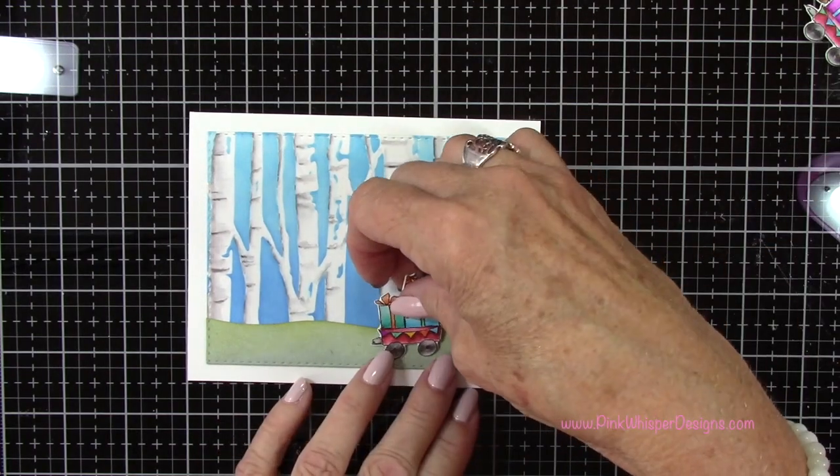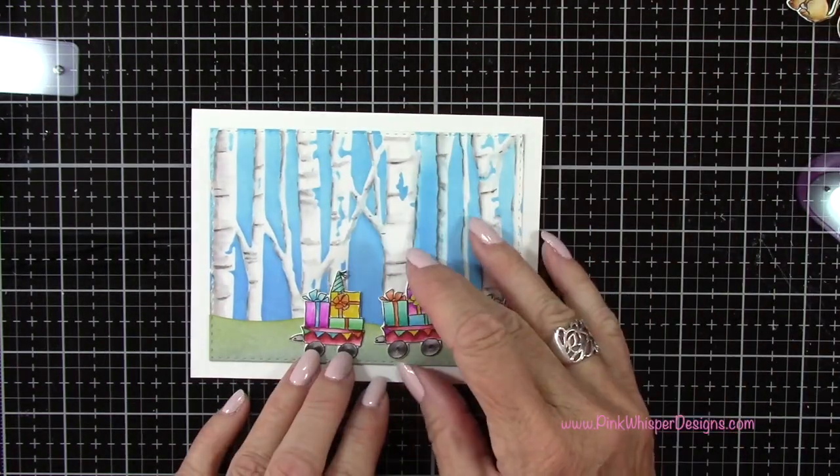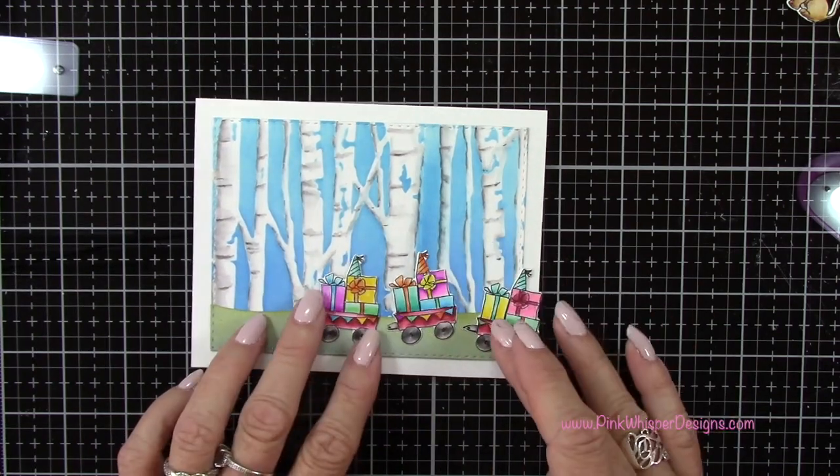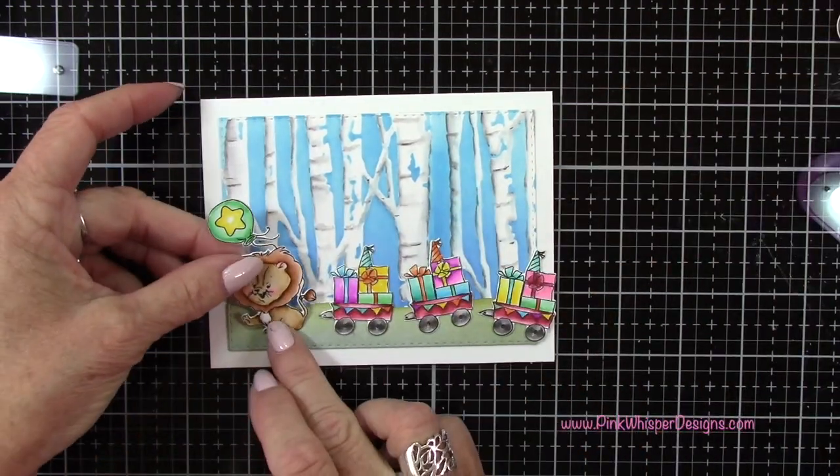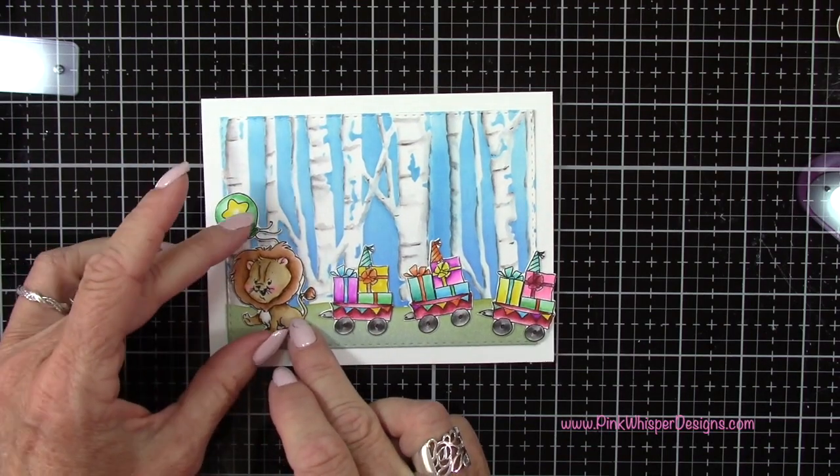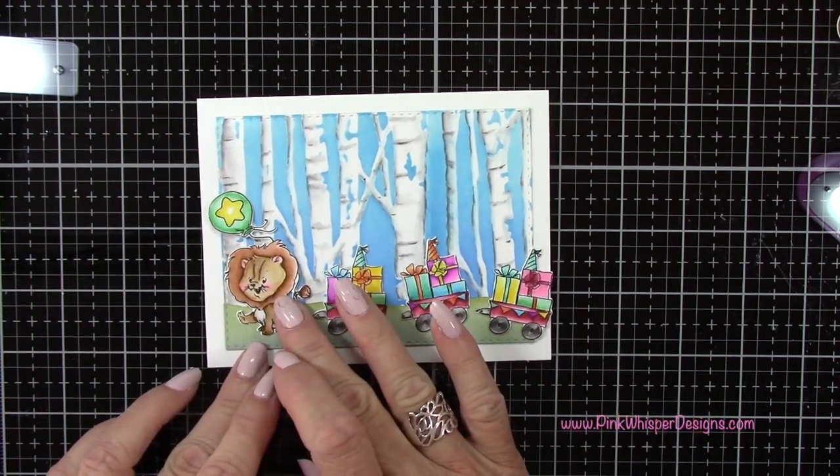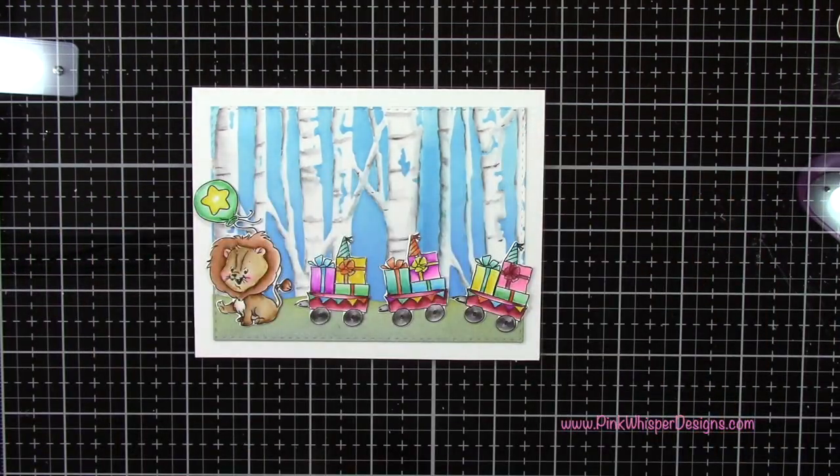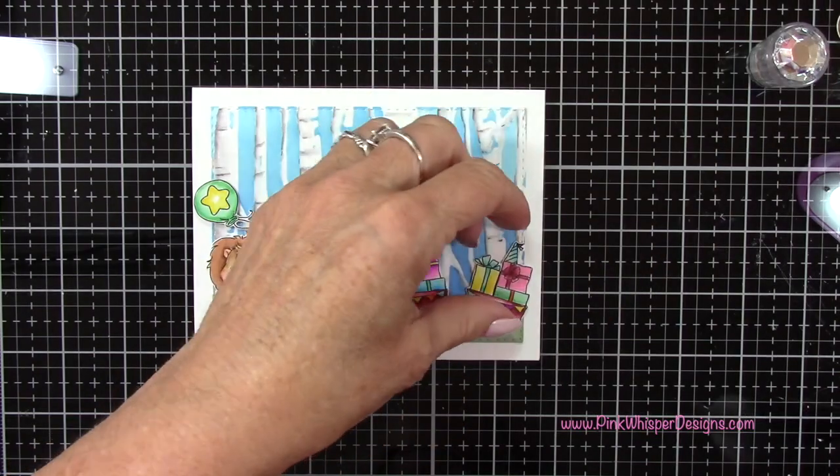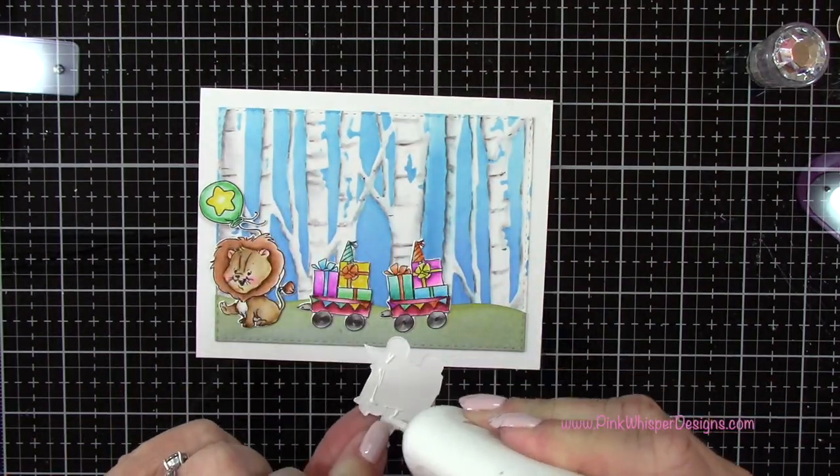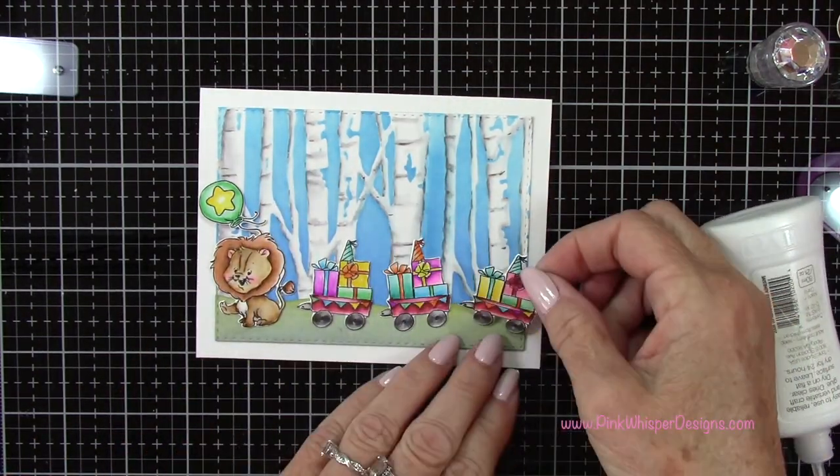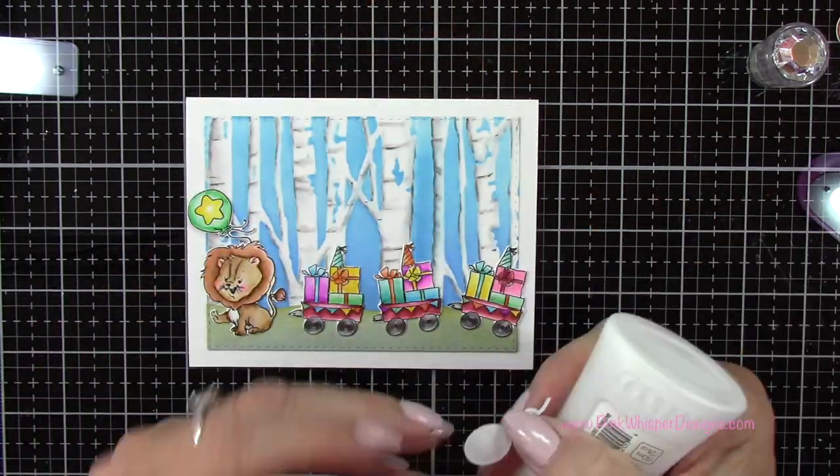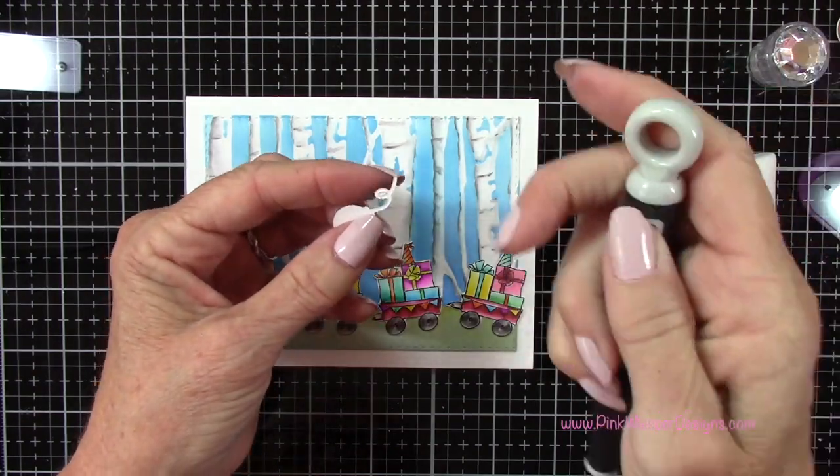And now I just want to kind of position out the little wagons here just to see where those are going to go. I kind of want them to look like they're kind of going up and down that little rolling hill border there. And then I've got my little lion leading the way here. So I've got my Nuvo deluxe adhesive and I'm going to go ahead and attach these. This first little wagon I'm going to let it hang over that little panel just a little bit to make it look like that scene does continue on a little bit.